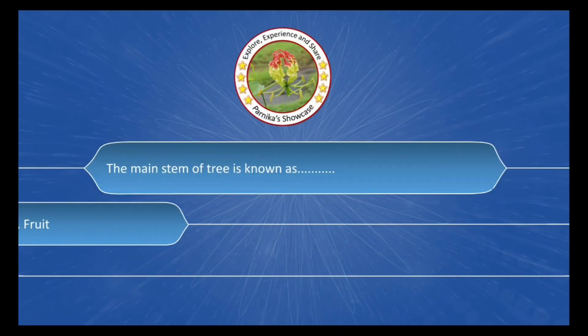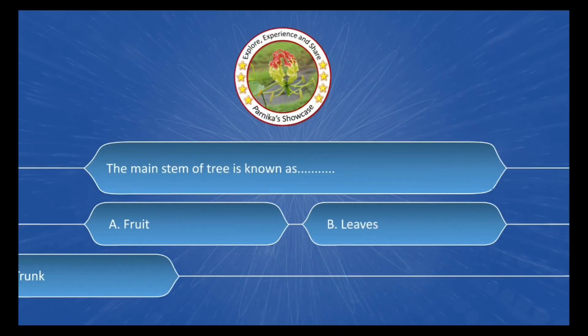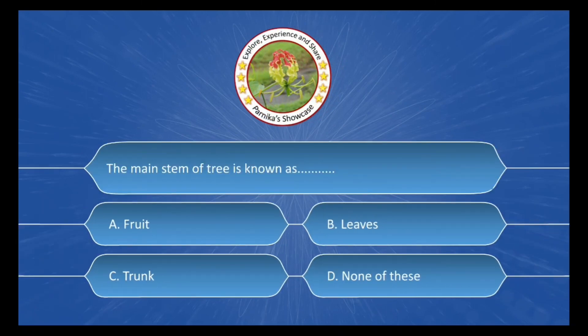The main stem of the tree is known as ___. The options are: A. Fruit, B. Leaves, C. Trunk, D. None of these. The correct answer is Option C: Trunk.